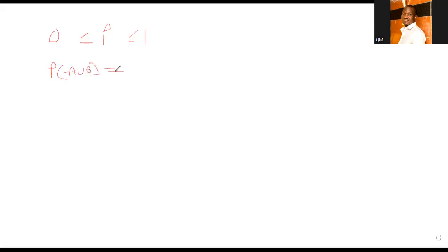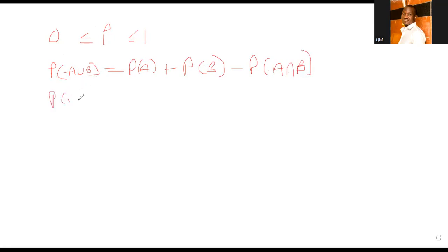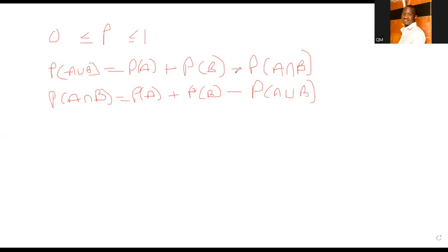The probability of A union B is simply the probability of A plus the probability of B minus the intersection of A and B. So this means that if you want to make A intersection B the subject, it becomes: P(A∩B) = P(A) + P(B) minus P(A∪B). This comes directly from this axiom of probability.